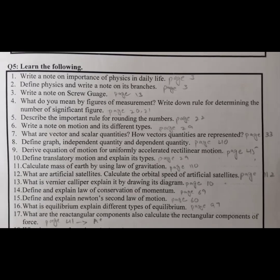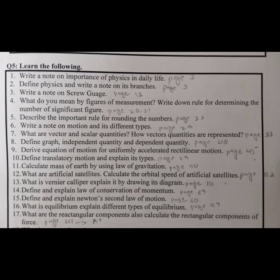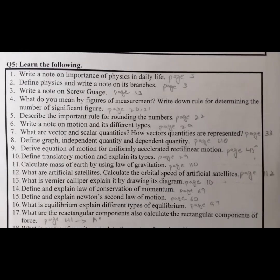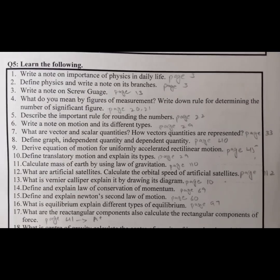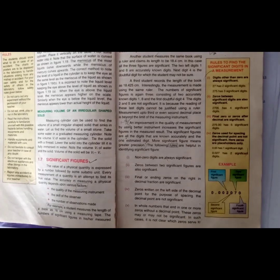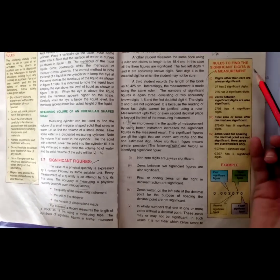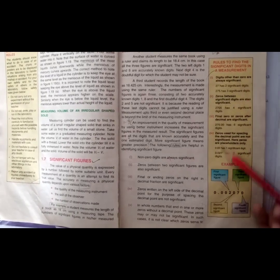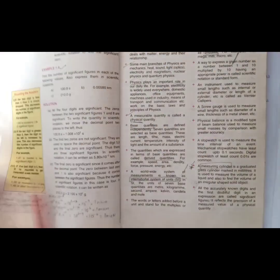Question number 4: what do you mean by figures of measurement? And write down the rule for determining the number of significant figures. Open up page number 20 and 21. Here we have the topic significant figures, and these are the rules to find the significant digits in a measurement. Now open up page number 23.